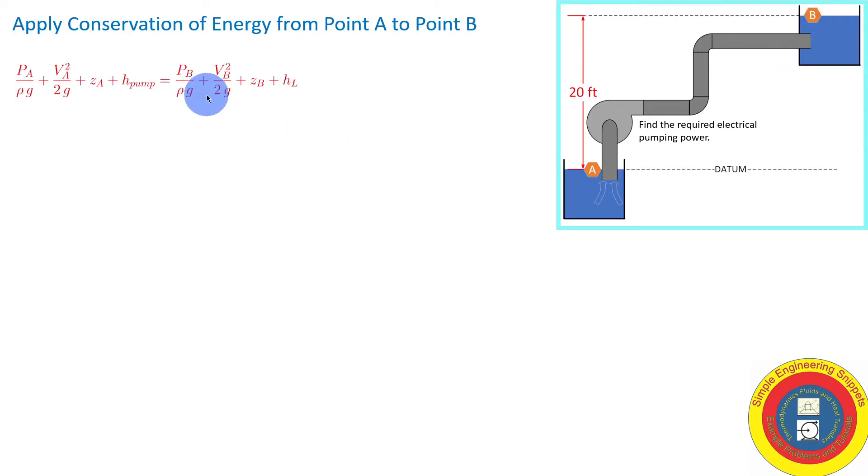Here's our equation. This equation says the mechanical energy at alpha plus the head of the pump is equal to the mechanical energy at bravo, plus the head loss from alpha to bravo. Let's simplify.